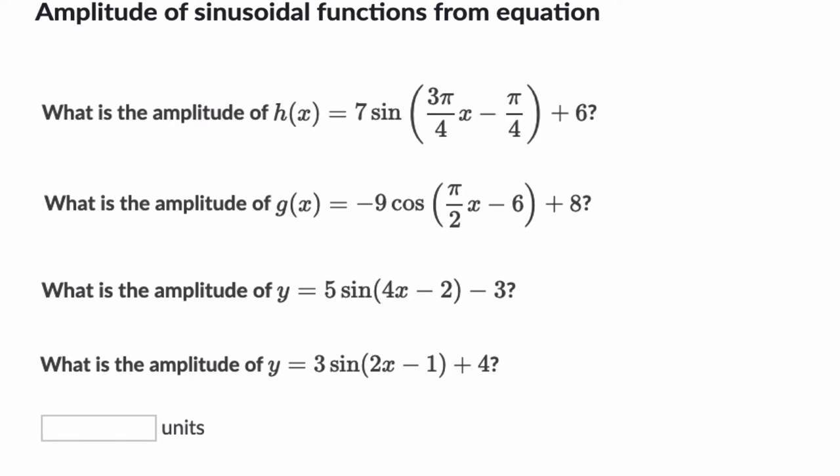Now, if you have an equation, it ends up being as easy as saying it's the absolute value of this number right here. So here, the amplitude is 7 in the first one. So you just put 7 in for the Khan Academy exercise here. Here, the amplitude is just 9, the absolute value of negative 9.